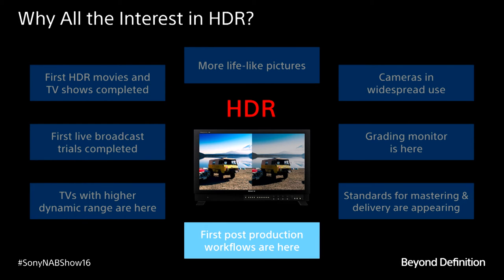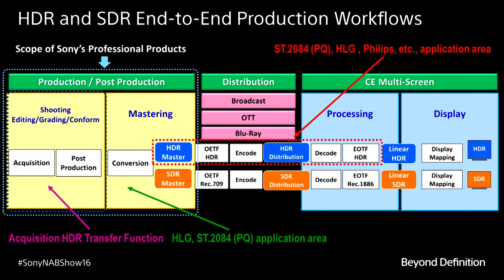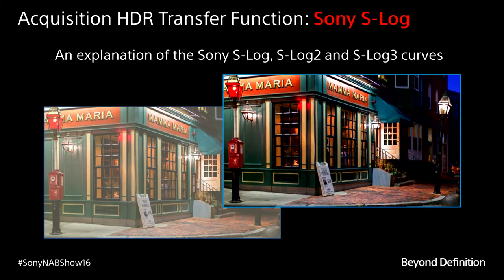In production, we have capture, color grading, and editing. Then distribution — encoders, satellite, cable, streaming — eventually gets to a set-top box and TV set where we do display mapping. In each area there are different techniques, some proprietary, some open. Sony knows very well the production and acquisition area. We developed a curve primarily for cinematographic applications back in the year 2000 — which is S-Log3 — beginning as S-Log, then S-Log2, now S-Log3.